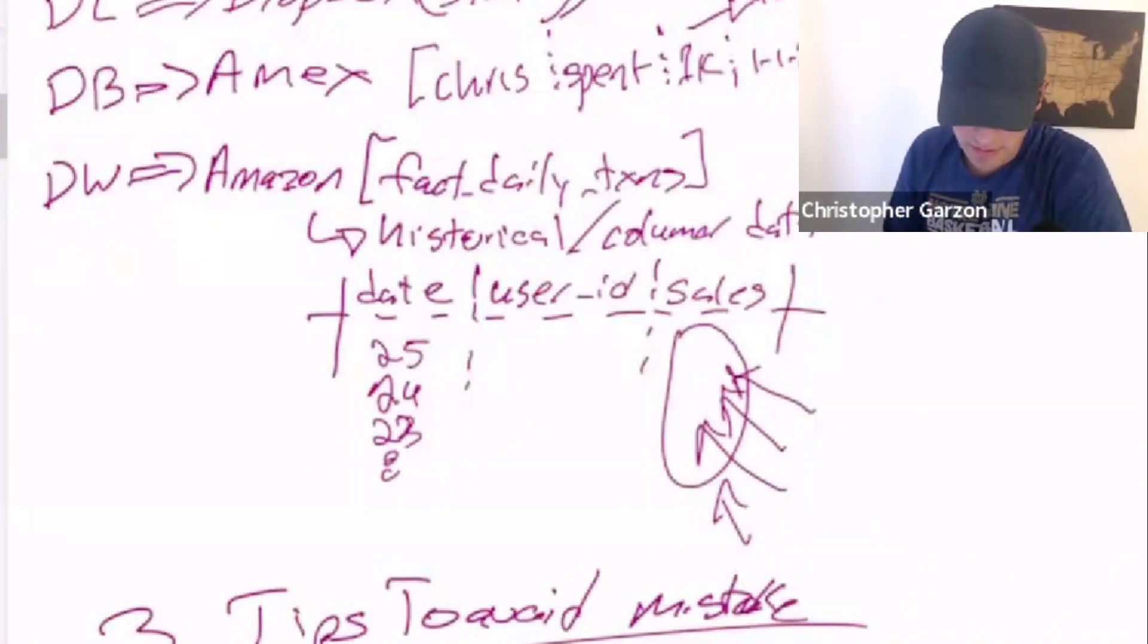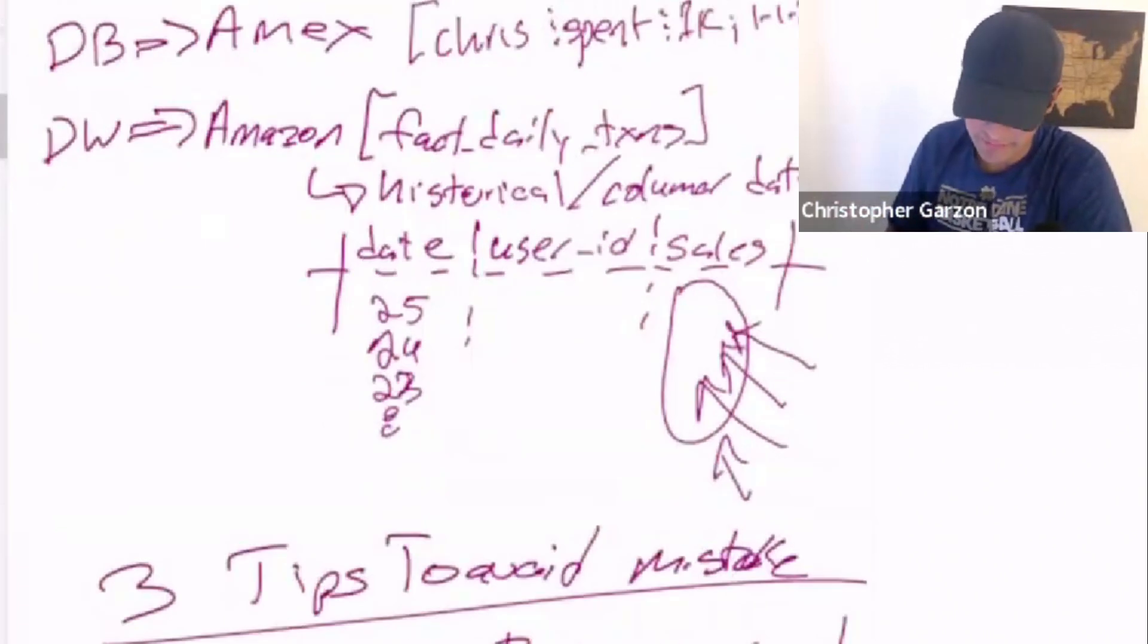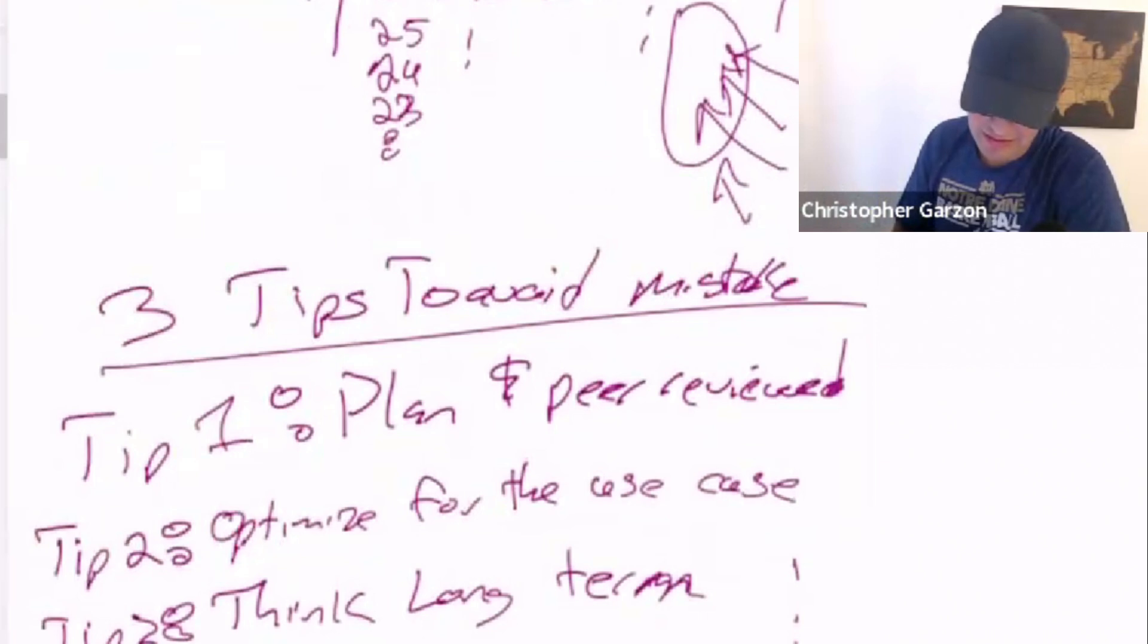Now, tip number two. This one is important. Optimize for the use case. And I'm actually going to cheat a little bit and give tip number three at the same time, which is think long term. So why am I grouping these two together? So if you don't understand the use case, you're just going to think that any of these, data lake, database, data warehouse fits. But if you understand, for example, let's stick with this Amex example. If you understand that Amex, what we're trying to do is build a fraud detection model. If you understand that somebody spending a thousand bucks at 2 a.m. should get flagged, you understand that this is one row of data. And obviously, now you know it, but in the beginning, you might not have been aware of that. So you have to understand the use case, because once you understand the use case, you can then deduce that this needs a database.